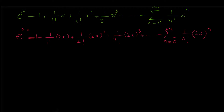Also note that you can write (2x) to the n as 2 to the n times x to the n, so this can be written in the form: sigma from n equals 0 to infinity of 2 to the n over n factorial times x to the n.